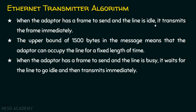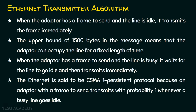When the adapter has a frame to send and the line is busy, it waits for the line to go idle and then transmits immediately. Ethernet is said to be a CSMA 1-persistent protocol because an adapter with a frame to send transmits with probability 1 whenever a busy line goes idle. To know more about this, watch my previous lecture titled CSMA.